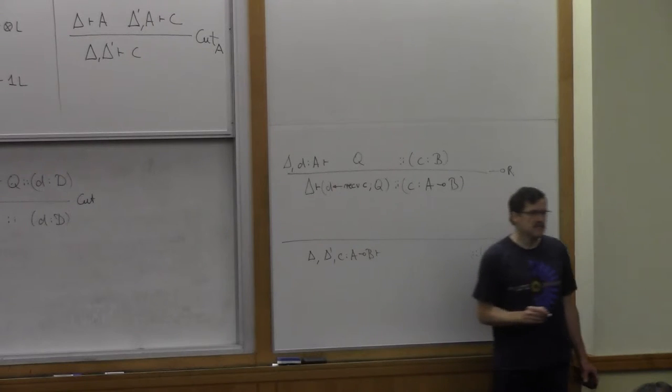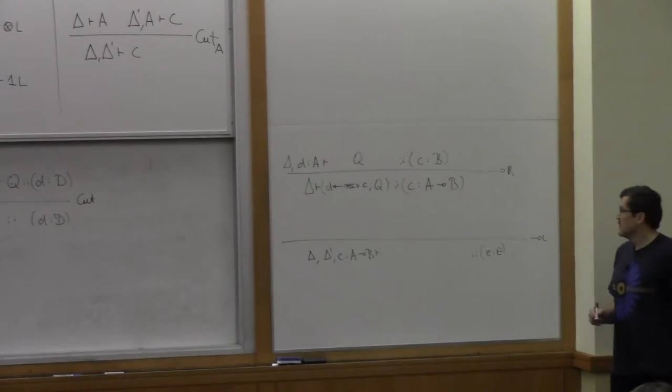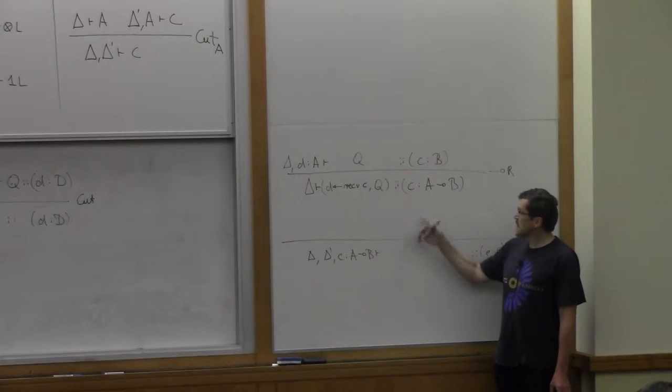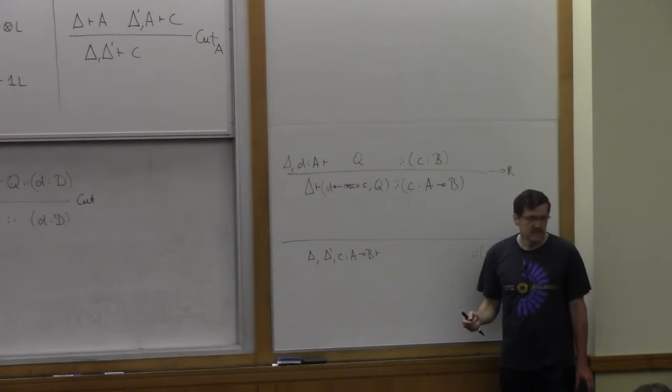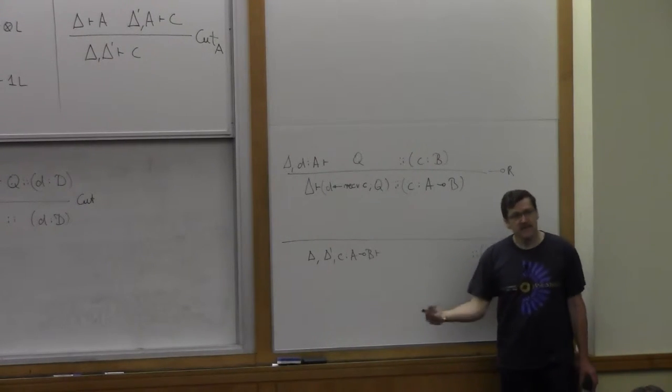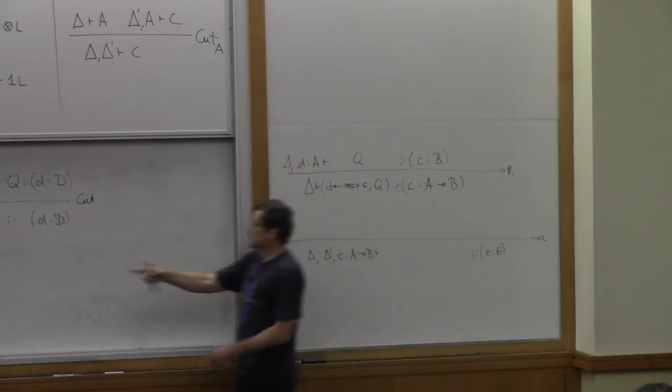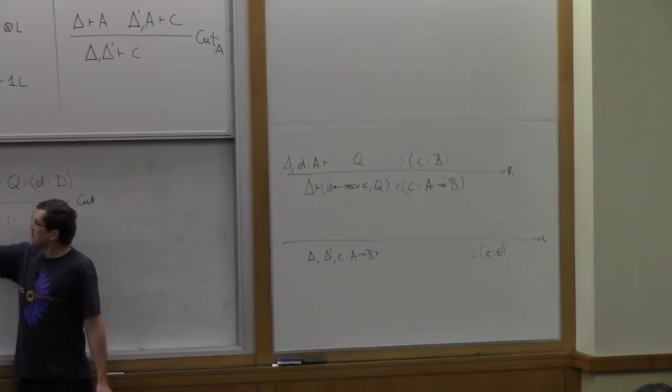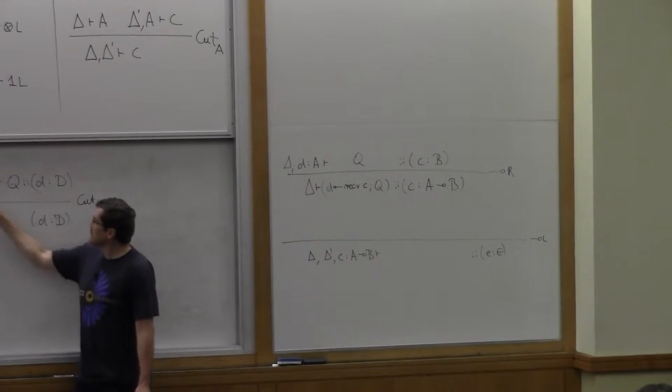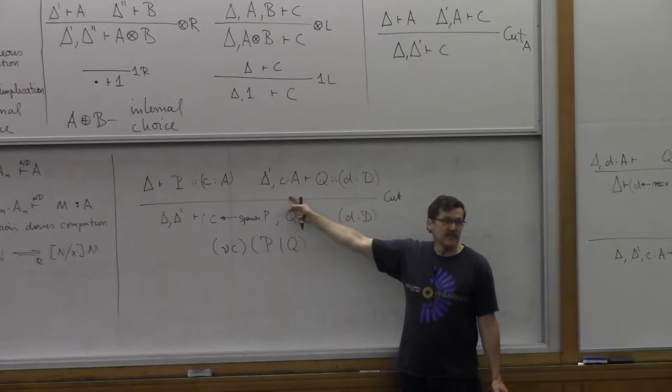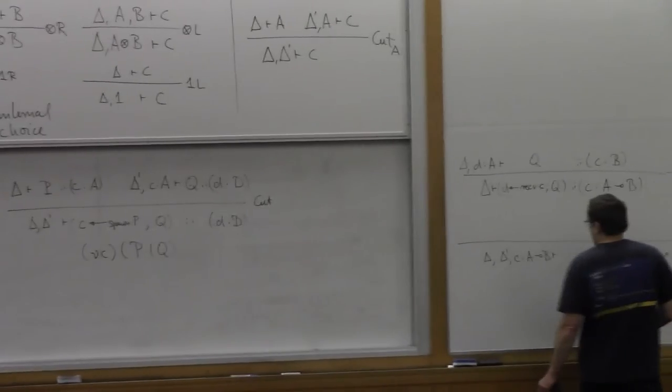So before we fill that in, could everybody guess if this is a receive, what would the left rule have to be? It would have to be a send. Because computation happens when the right rule meets the left rule. So if the right rule wants to receive, the left rule has to send so that they can communicate properly.